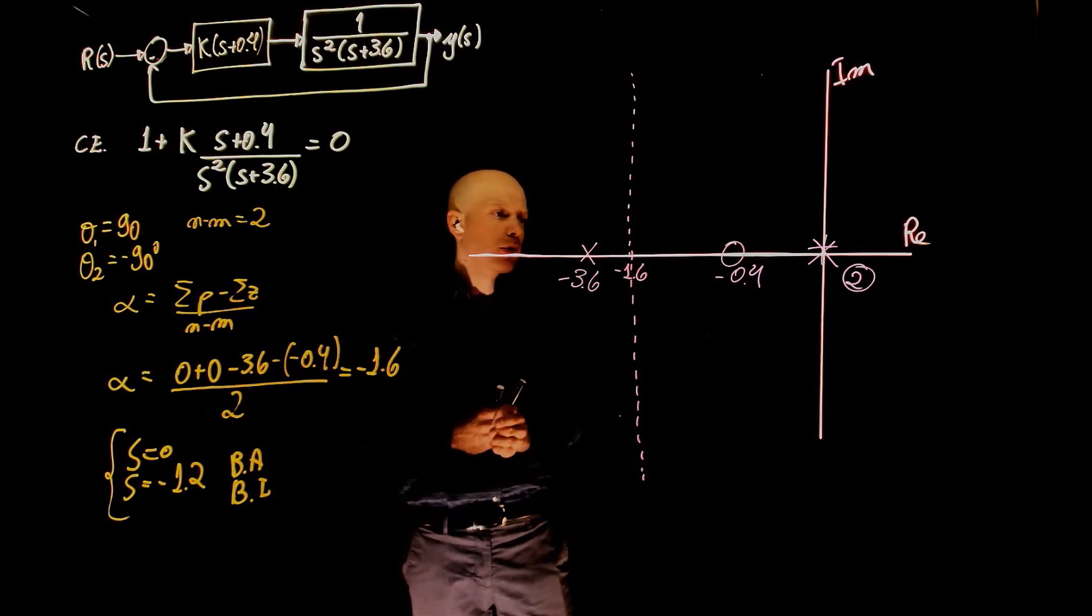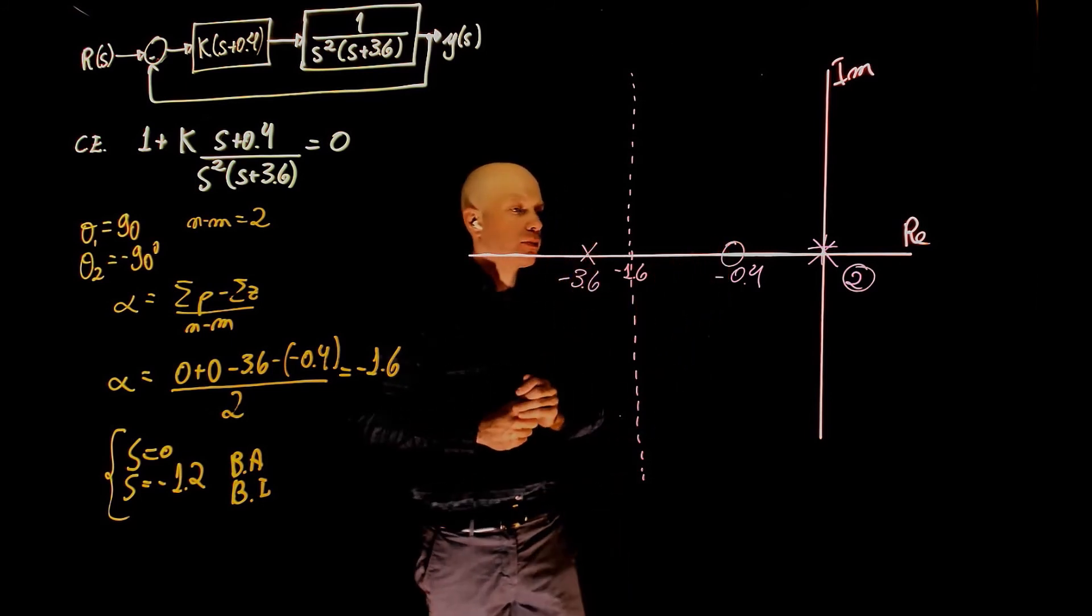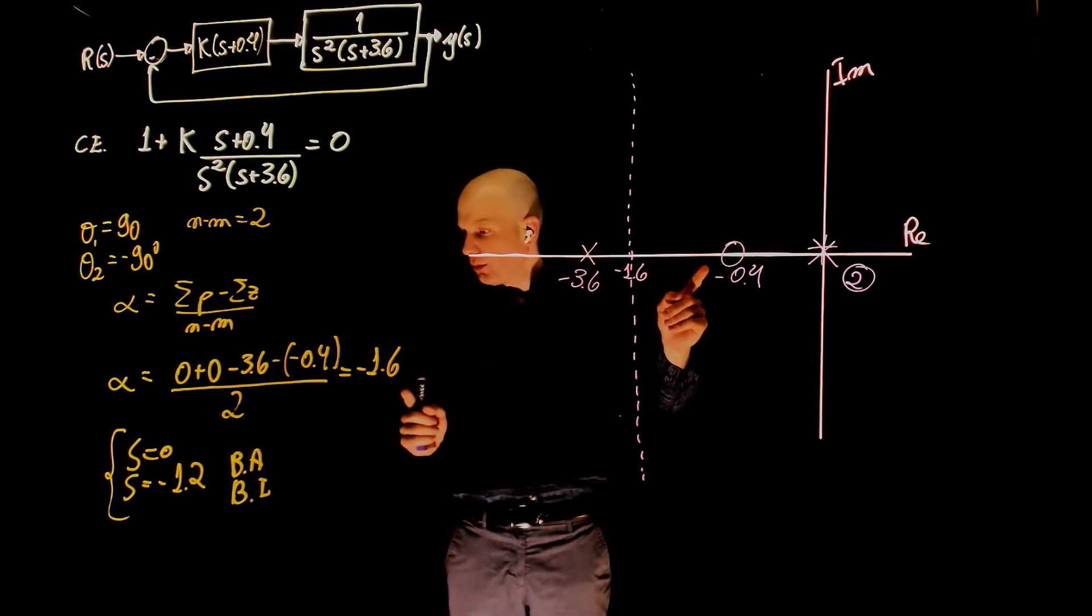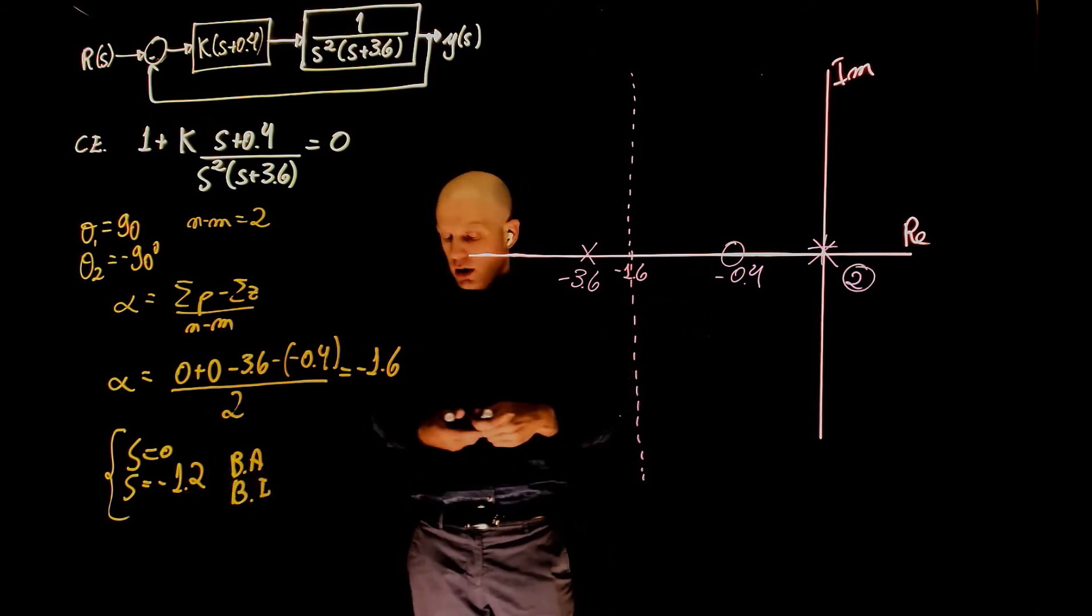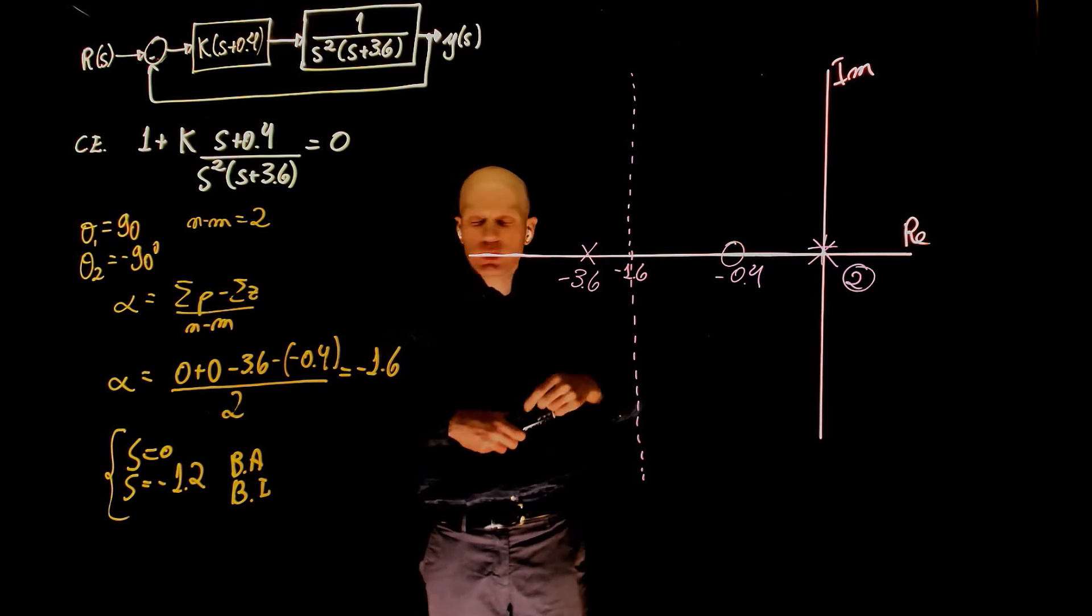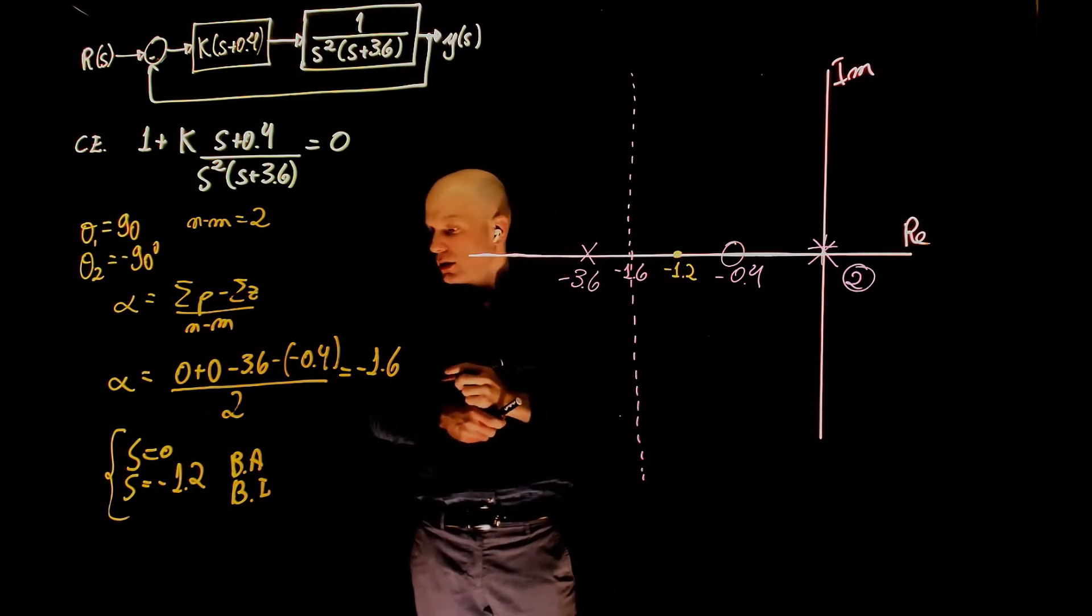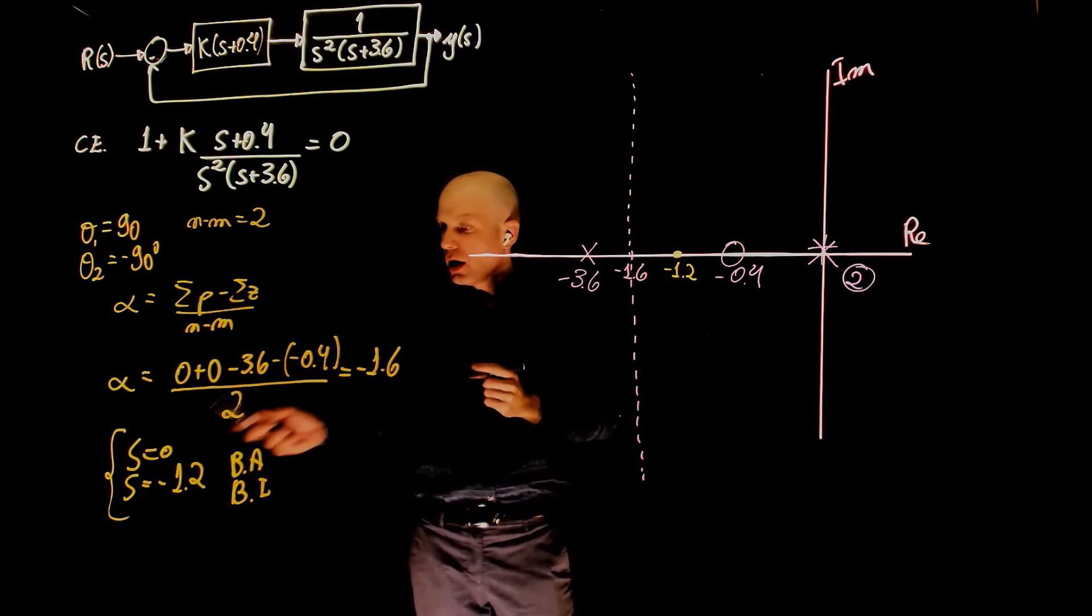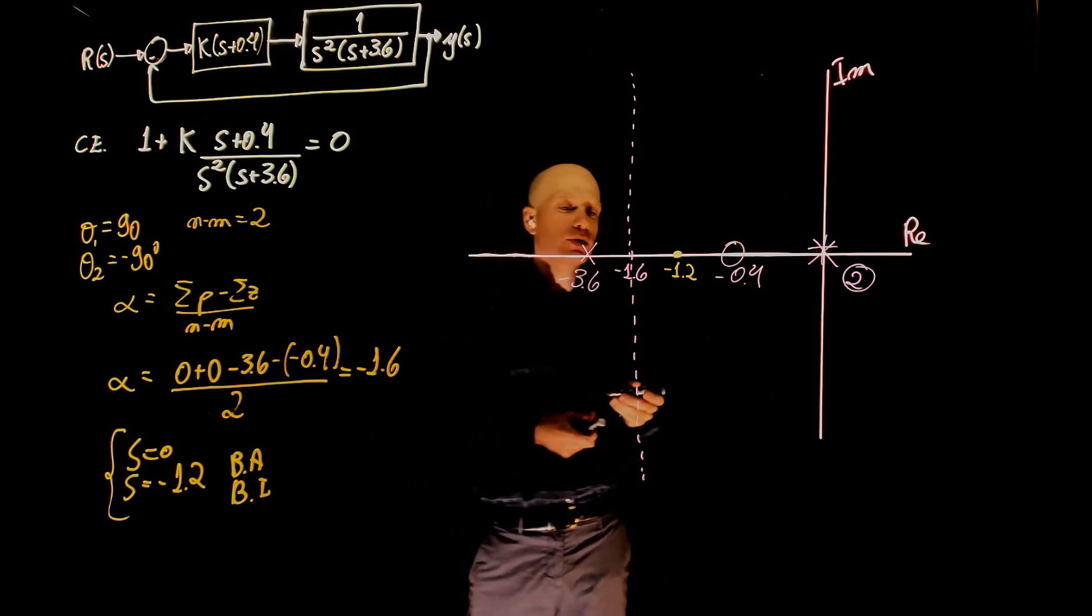So, the only odd portion of that count is between these two elements here, which means that our breakaway or break-in point at negative 1.2 is indeed a breakaway or break-in point. Let's write it down here. Negative 1.2 is a breakaway or break-in point, and zero is the other breakaway or break-in point, which is located where the poles are.